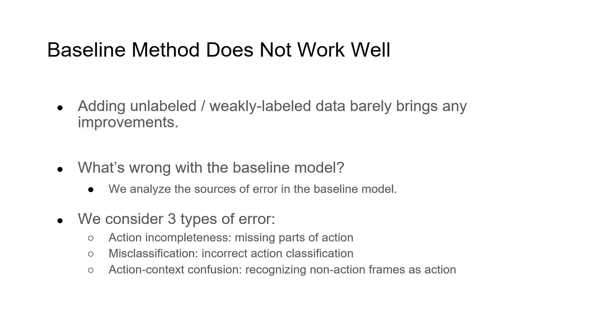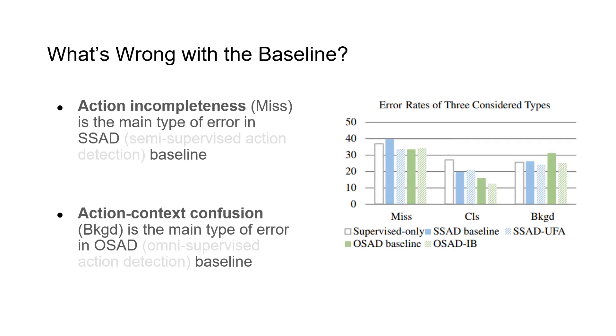However, we find that the baseline model that simply adds unlabeled and weakly labeled data into training hardly helps the performance. So to find out the reason, we analyze the main errors in the baseline model and we explore three kinds of errors here: the action incompleteness, the misclassification, and action context confusion. It turns out action incompleteness is very common in the semi-supervised baseline, and the action context confusion becomes the main error in omni-supervised baseline.